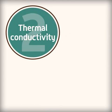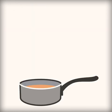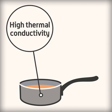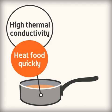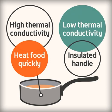Thermal conductivity is a measure of how heat travels through a material. For example, a frying pan that is made of metal has high thermal conductivity to heat the food quickly, but it has an insulating handle with low thermal conductivity so you don't burn yourself.